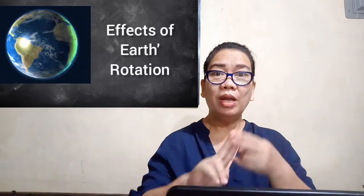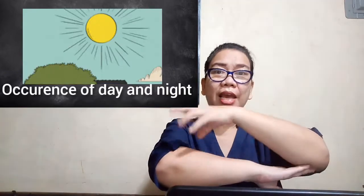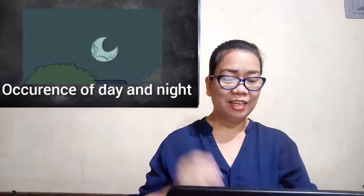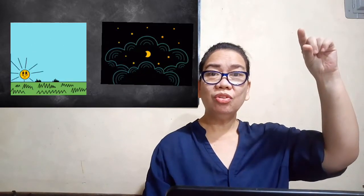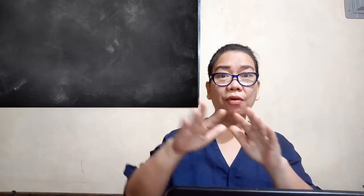Number one: the occurrence of day and night. Number two: the daily rising and setting of the Sun, the Moon, and the stars. And also the flow of air and water.